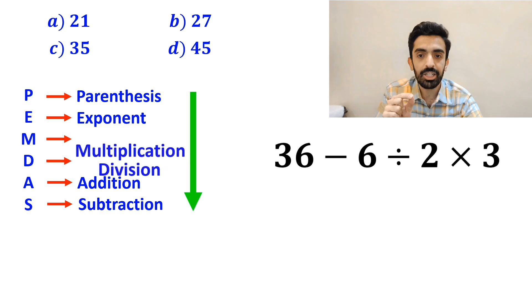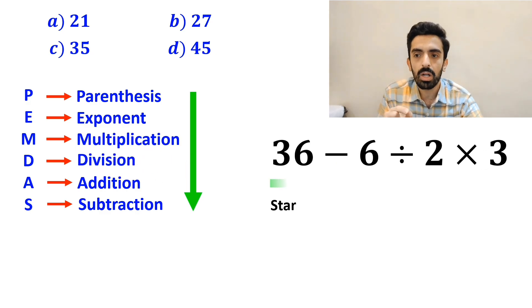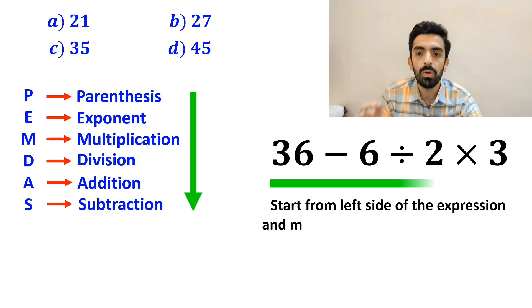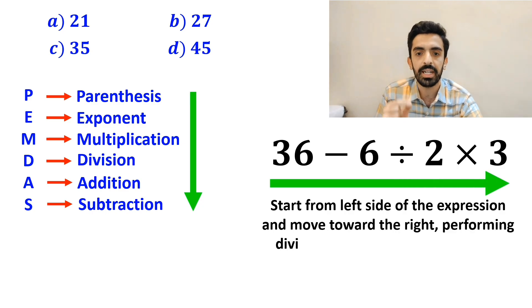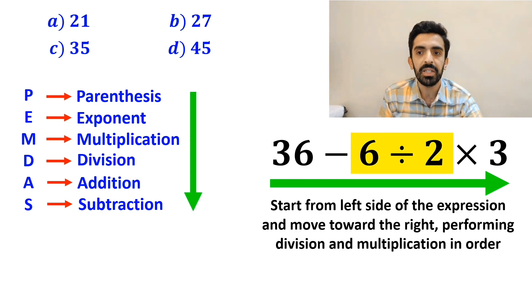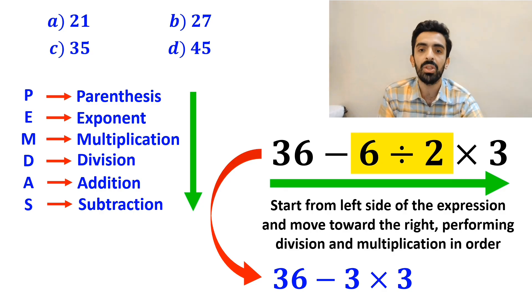In this situation, the best thing to do is to start from the left side of the expression and move toward the right, performing division and multiplication in order. So, first we perform the division between 6 and 2. And this expression simplifies to 36 minus 3 times 3.